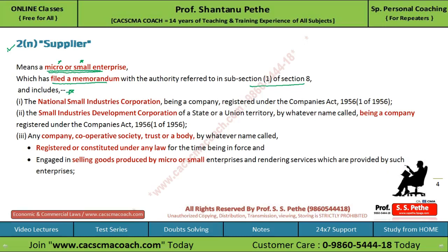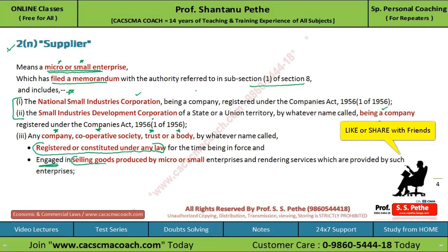And supplier includes: first, National Small Industries Corporation being a company registered under Companies Act. Second, Small Industrial Development Corporation of the state or union territory being a company registered under the Companies Act. तो इन दोनों inclusions की condition यह है कि वो registered company होनी चाहिए under the Companies Act. And third, it includes any company, cooperative society, trust or a body by whatever name called, registered or constituted under any law for the time being, and engaged in selling of goods produced by micro or small enterprise and rendering services provided by such enterprise.